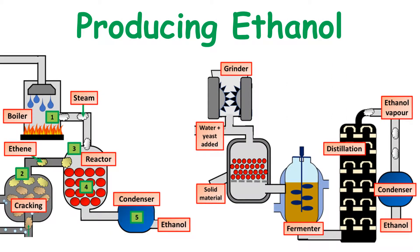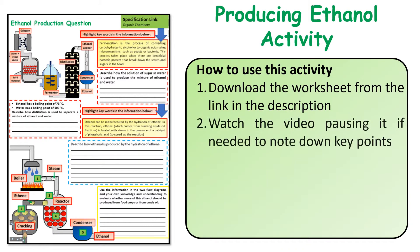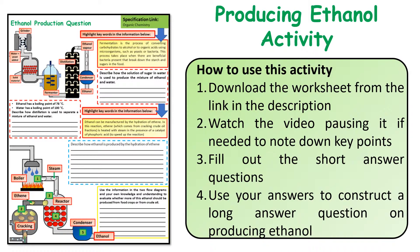This short video will look at the two main methods that we can produce ethanol industrially. The best way to use this video is to follow the link below, download the question sheet, watch the video pausing at key points and noting down key words. Have a go at filling out the shorter answers, then the longer answers on the sheet, to help solidify what you know about the two processes.